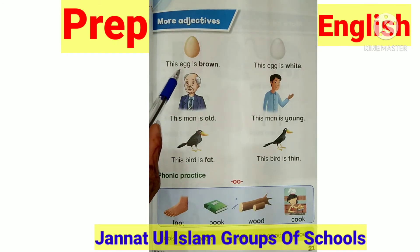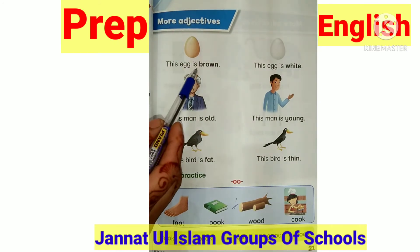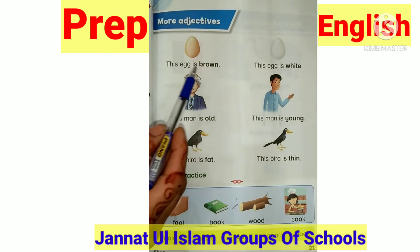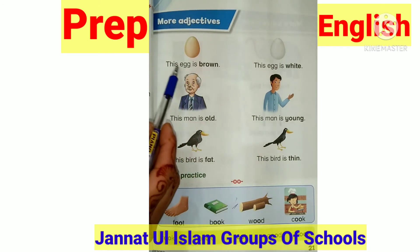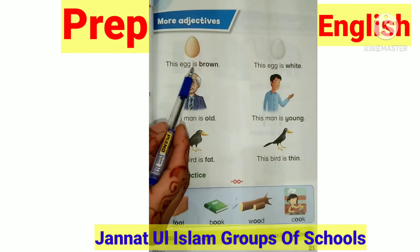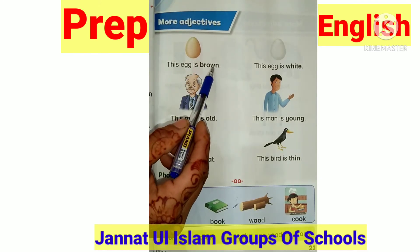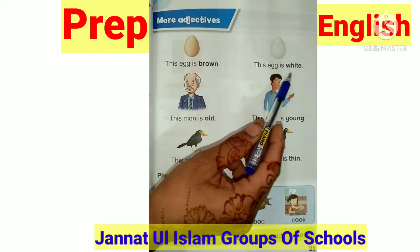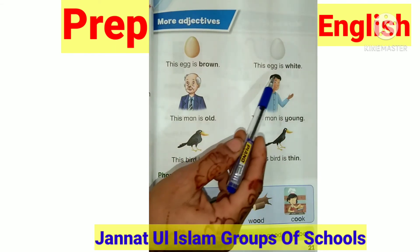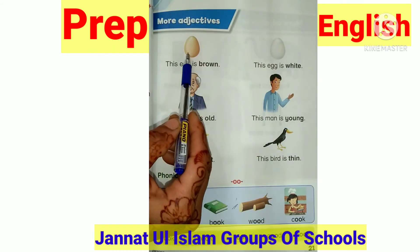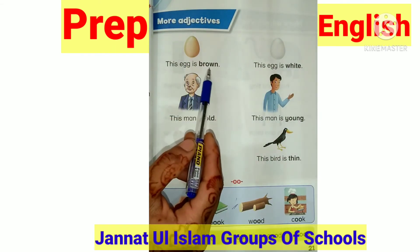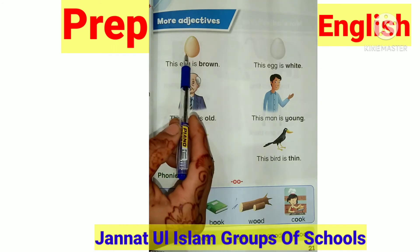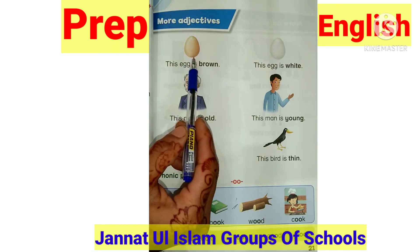आप मेरे साथ रीड करें। This egg is brown. This egg is white. इधर brown था तो हमने क्या बताया है — This egg क्या है? Brown. इधर egg क्या है? White.